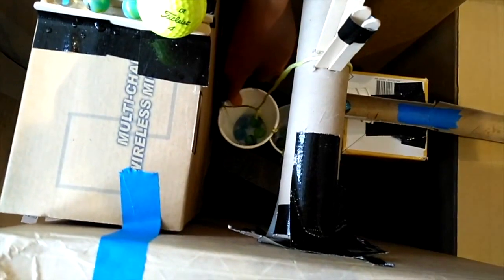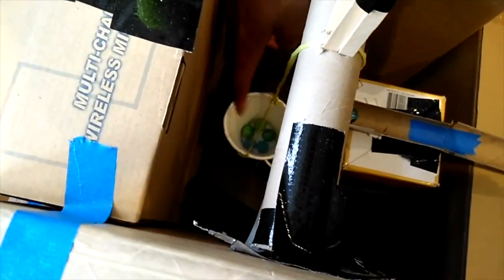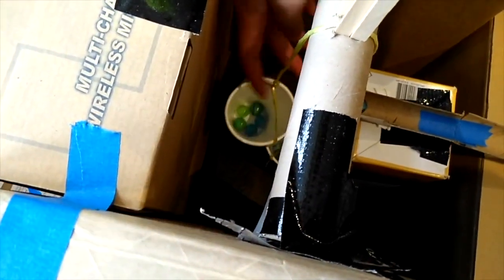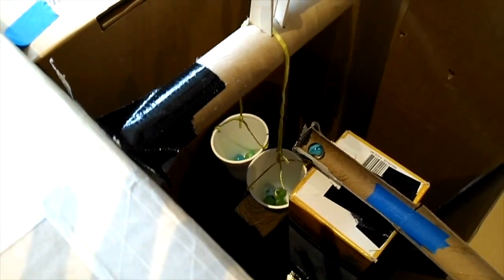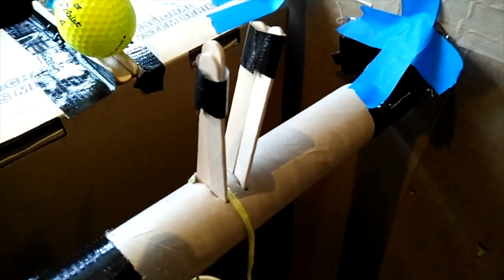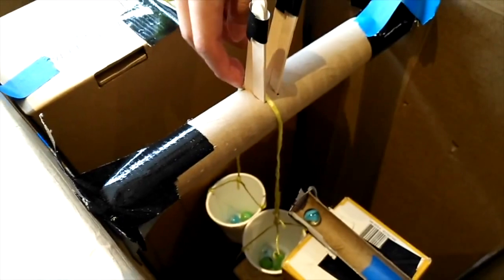Here we have two styrofoam cups. We poke two holes in it to thread the string into it. We attach these two cups with another piece of string with a knot. We have a paper towel roll that holds the pulley system, allowing the cups to move up and down.